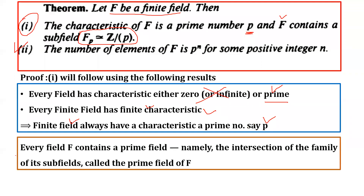Another result: every field F contains a prime field, namely the intersection of the family of its subfields. Every field has a prime field obtained by intersecting all its subfields. The prime field is the one with no further proper subfield. Taking the intersection of all proper subfields clearly leaves no proper subfield contained, so it is a prime field.